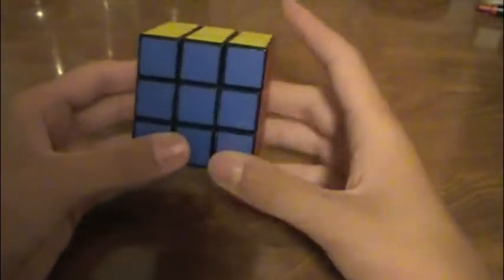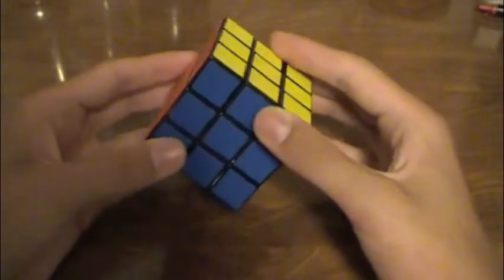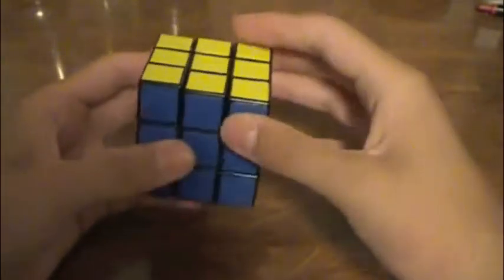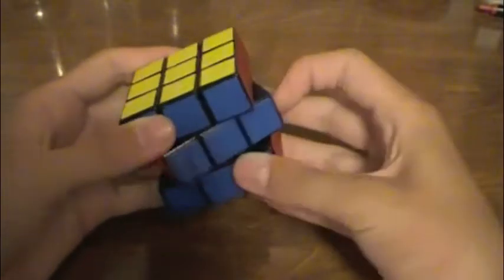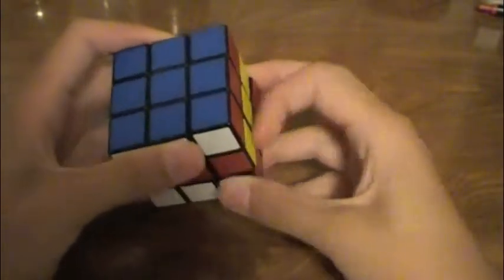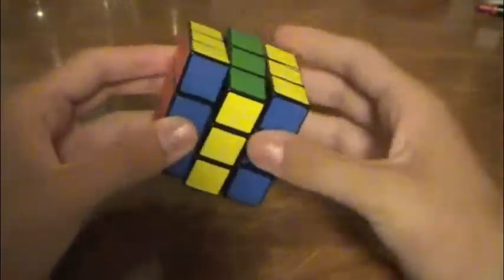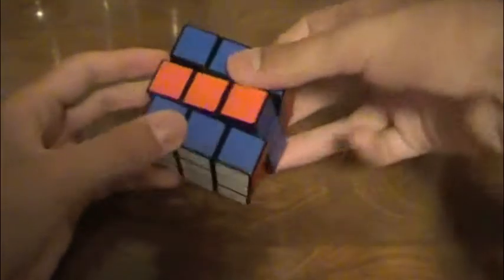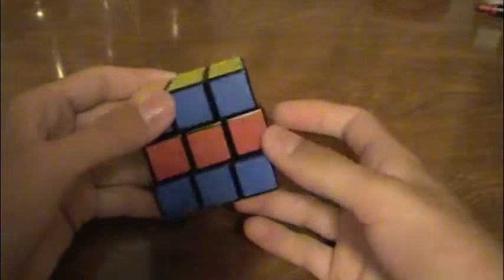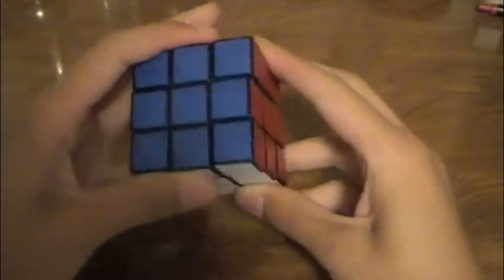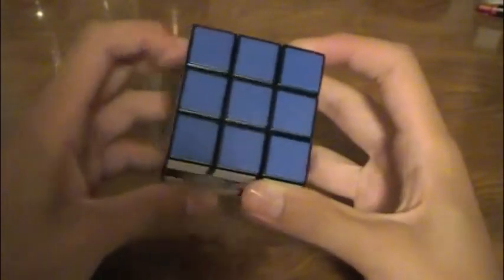We also have a notation for the slices on the Rubik's Cube, like this. This is the M layer, this is the E layer, and this is the S layer. This is an M, and this is an M prime. This is an E, and this is an E prime. This is an S, and this is an S prime.